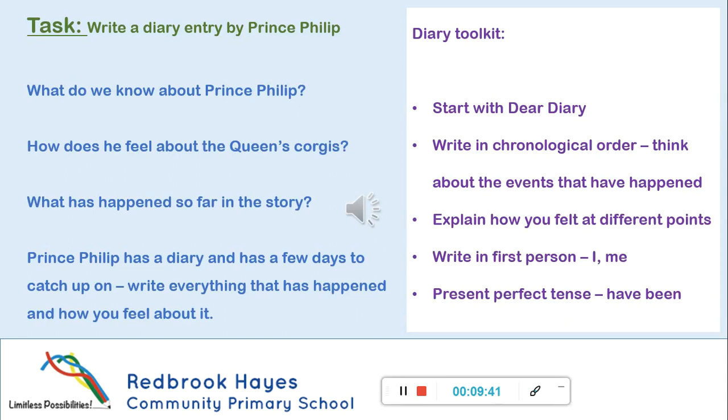I'm not going to give you too much input here for writing a diary entry because I'm pretty confident that you guys are great at this. This is a way of helping us understand what's happening so far in the story you're reading, Titus Rules OK. It helps us really get into the role of another character. You've loved doing these in class. To help get you into the right frame of mind, I've got some questions. What do we know about Prince Philip? How does he feel about the Queen's Corgis? What has happened so far in the story? Prince Philip has a diary and has a few days to catch up on. Write everything that's happened so far in the story and how you feel about it.